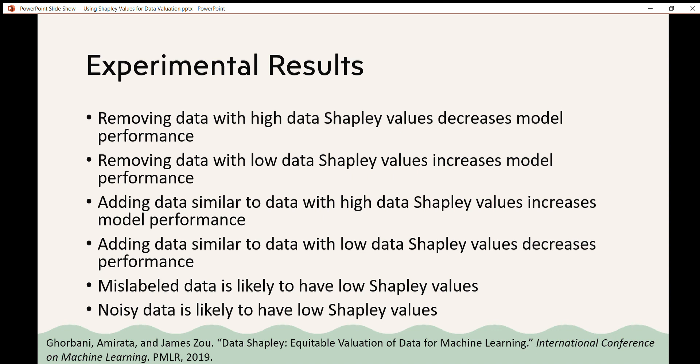So you can see how these values could be used. You can go through data points with low values to look for mislabeled data or noisy data. You might want to collect data that is more like data with high values to increase model performance. Or you might want to collect data that's more like data with low values, which may decrease your model performance but increase the performance on data that might be outliers or noisy.